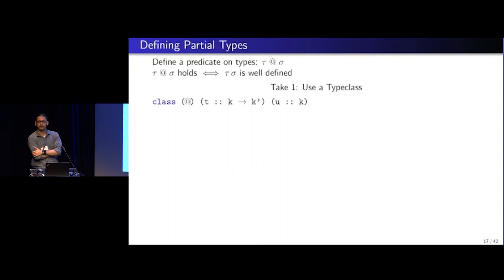Well, it's a predicate. So the first approximation is, let's try to encode this as a type class. So a class at takes in two type parameters, T and U, and it intends to hold only when T at U is well defined, right? So if we have a total type, list at sigma holds everywhere. So we just say, instance list at sigma holds here.